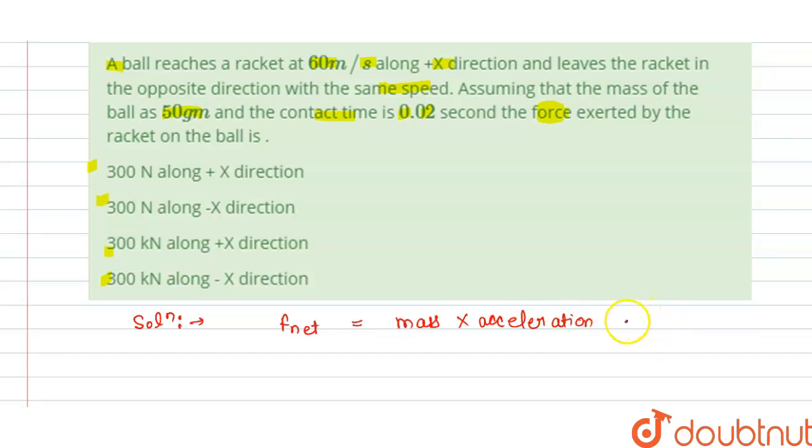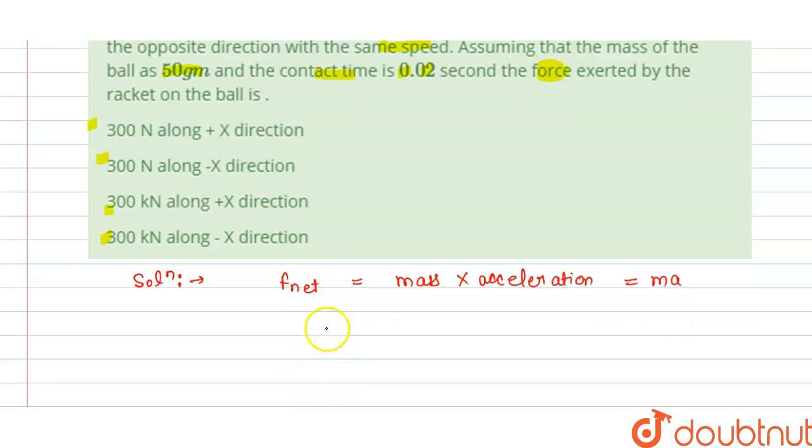And we can write this as MA, that is mass and acceleration. And we know that acceleration, denoted by A, is equal to change in velocity with respect to time. It is the rate of change of velocity with respect to time. We have final minus initial velocity and this is divided by T time here.